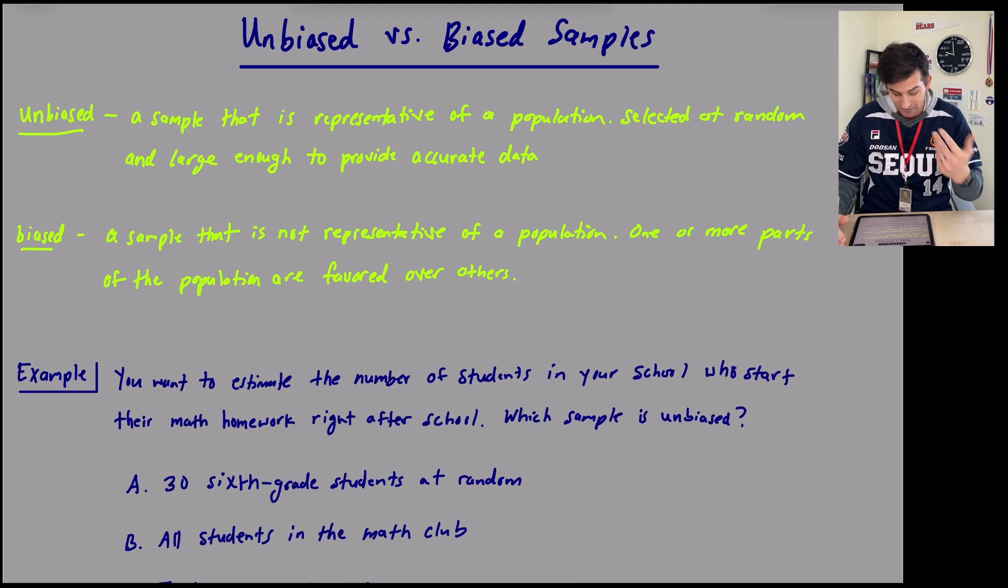So first of all, let's talk about the definition. What is unbiased? What is biased? Unbiased would be a sample that is representative of a population and it's selected at random and it's large enough to provide accurate data. So kind of three stipulations there. Representative of a population, so large enough to represent a population that you're trying to figure out something about.